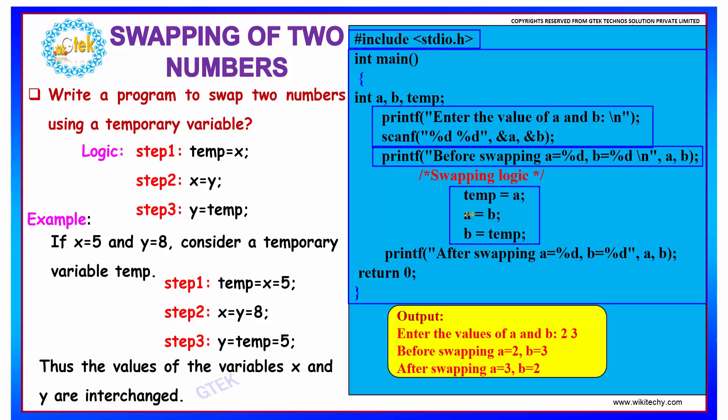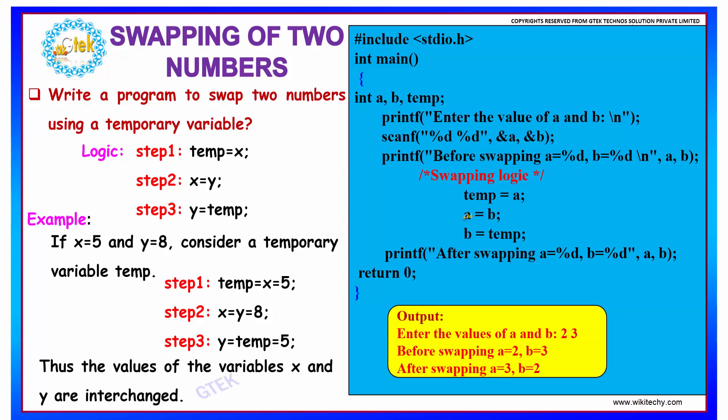So if you see, now our A will have the value of B and our B will have the value of A. As simple as that. Then, we can simply display our value of A and B that is done using a printf statement. Thus, we can display the swapped two numbers.